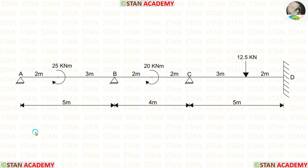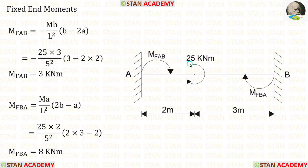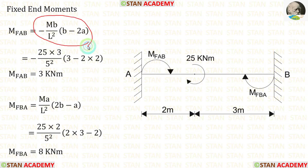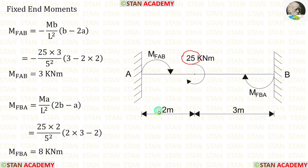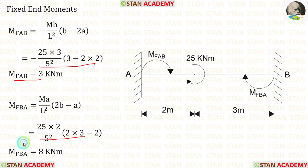Now we are going to find the fixed end moments. First, let us take span AB. There is a clockwise concentrated moment not acting at the center. The formulas to calculate the fixed end moments are: minus MB divided by L squared times (B minus 2A), and MA divided by L squared times (2B minus A). Here M is 25, A is 2, B is 3. Applying the values, we get MAB and MBA.